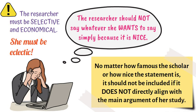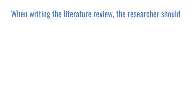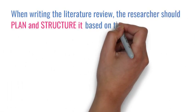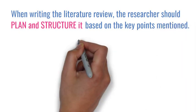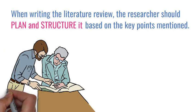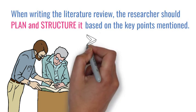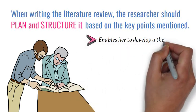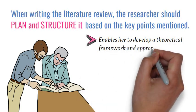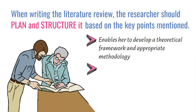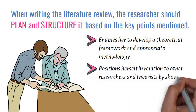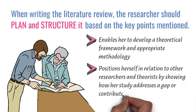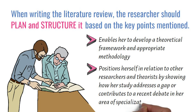When writing the literature review, the researcher should plan and structure it based on the key points mentioned earlier. In this way, the researcher will have a clear picture of the flow of the tasks that need to be developed in writing this section of the research paper. It will also enable her to develop a theoretical framework and appropriate methodology for her study, as well as position herself in relation to other researchers and theorists by showing how her study addresses a gap or contributes to a recent debate in her area of specialization.